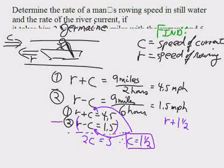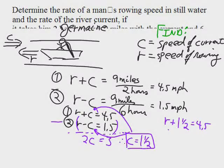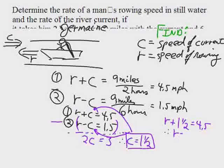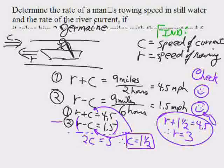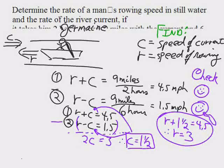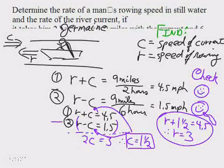Doing the math, you find out the current's 1.5 miles per hour. And the rower must be 3. Survey says 3. You should check your answer and it does work.